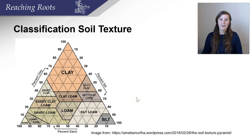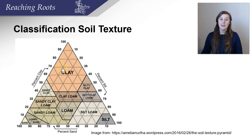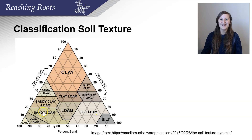This is the graph we use for deciding soil texture. On each side of this triangle, there's the percent of each mineral component: percent of silt, percent of sand, and percent of clay. If you know these percentages, you can determine which soil you have in your yard — is it a clay soil, a silt loam, a silt soil, or a sandy soil? We'll learn how to do this in part two of the soil science lecture.